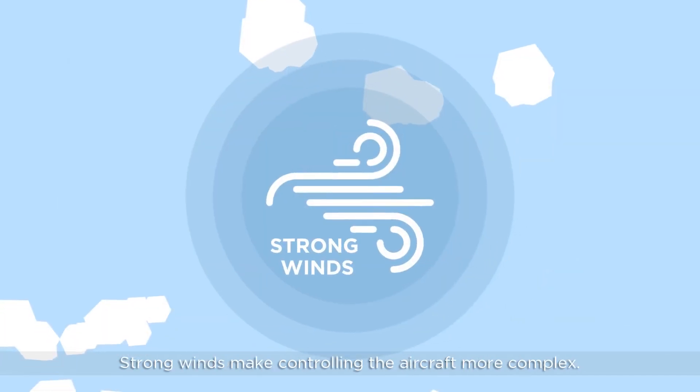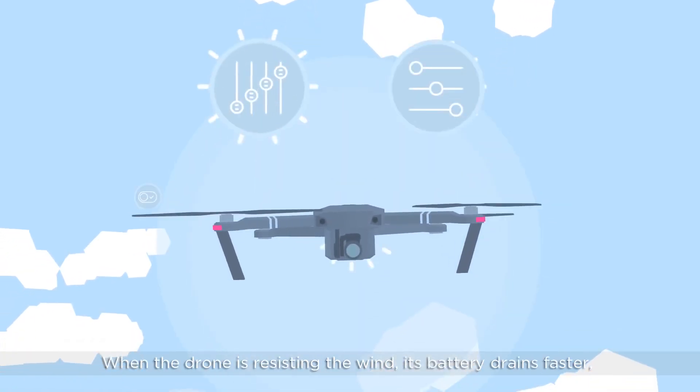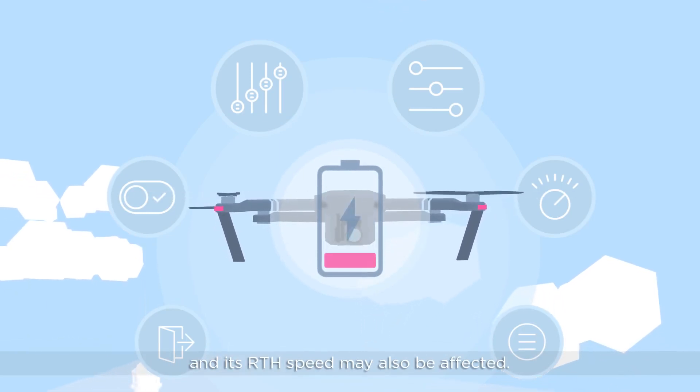Strong winds make controlling the aircraft more complex. When the drone is resisting the wind, its battery drains faster, and its RTH speed may also be affected.